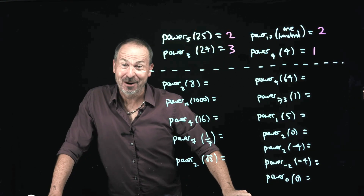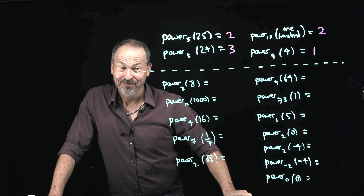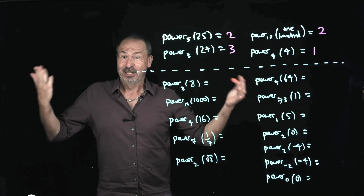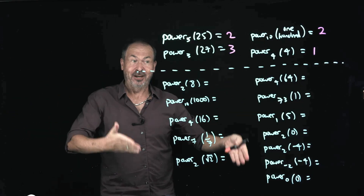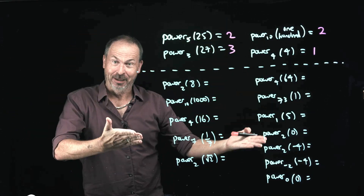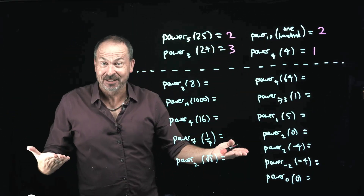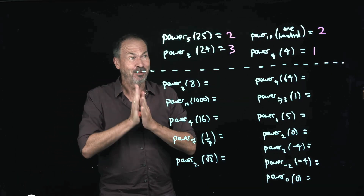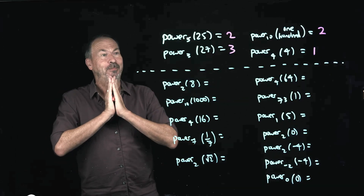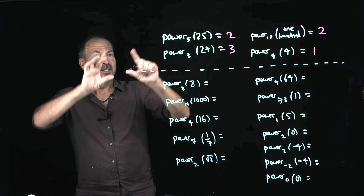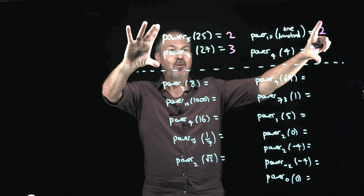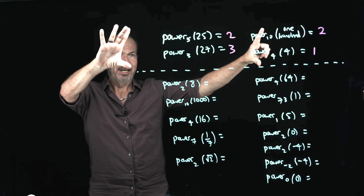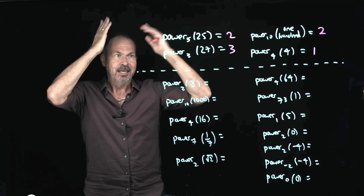OK, this is a scary looking worksheet. It doesn't even have instructions. So our first challenge is to figure out what we're meant to be doing, and our second task is to do it. Can we figure out what's going on here? We're on this top part here. We've got four examples of what shows what we're meant to be doing and how we're meant to be thinking.